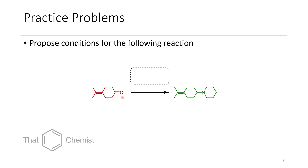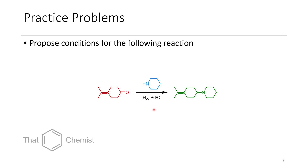In this first problem we can see that we start with a ketone and we get an amine, so we have to do some sort of reductive amination. In this case I propose using this piperidine ring and treating it with hydrogen and palladium on carbon to do our reductive amination.